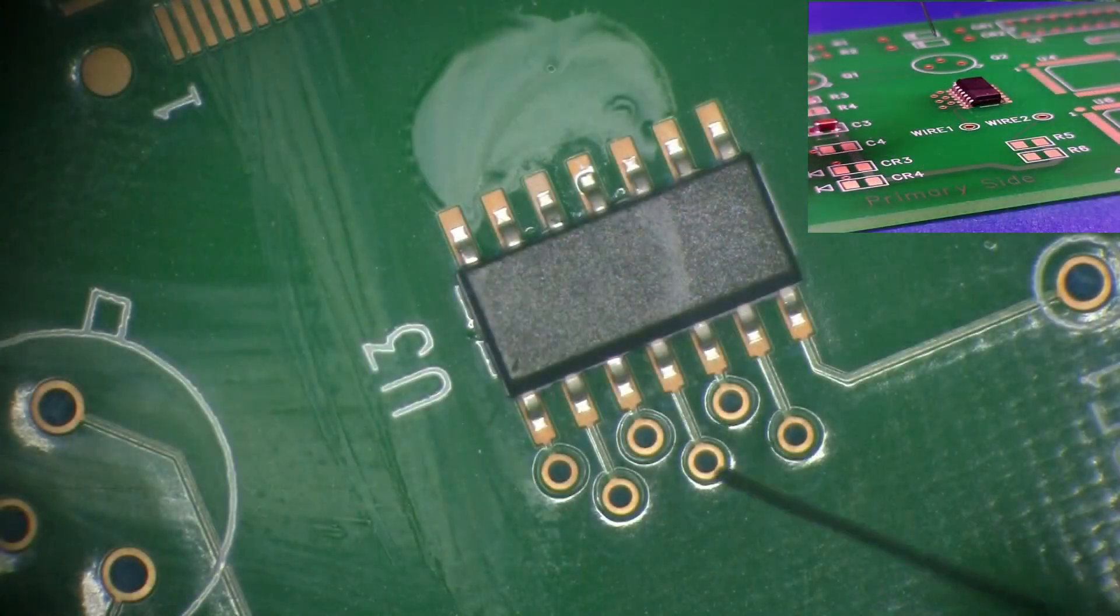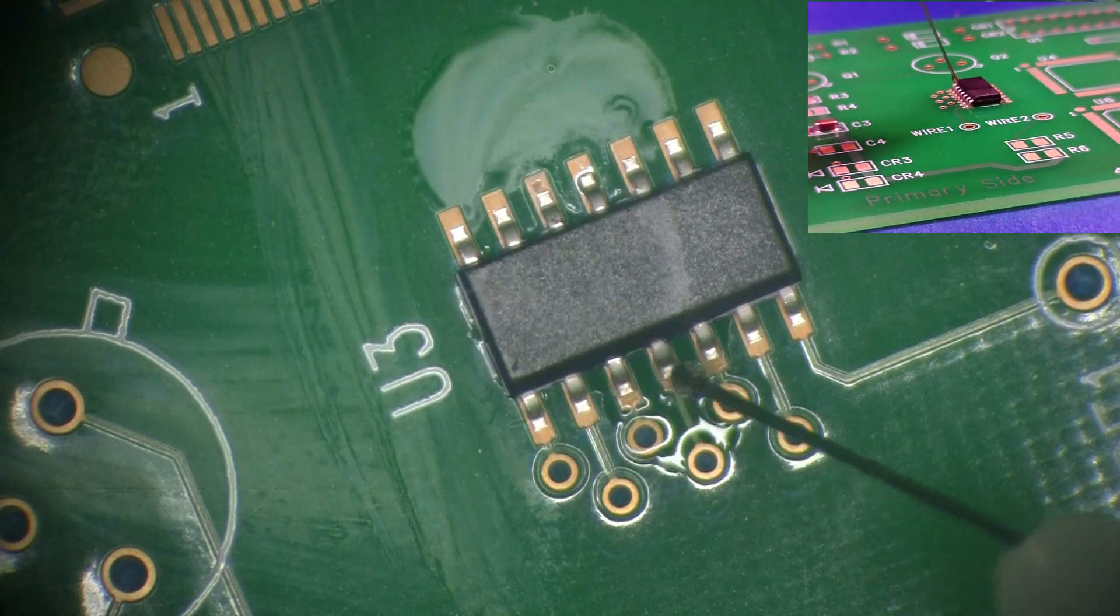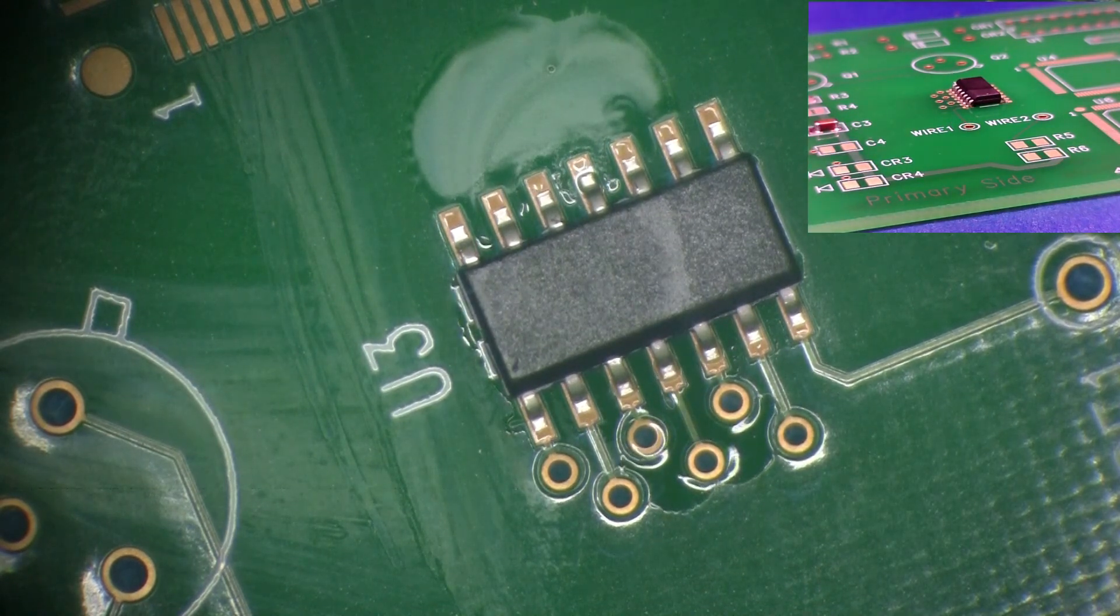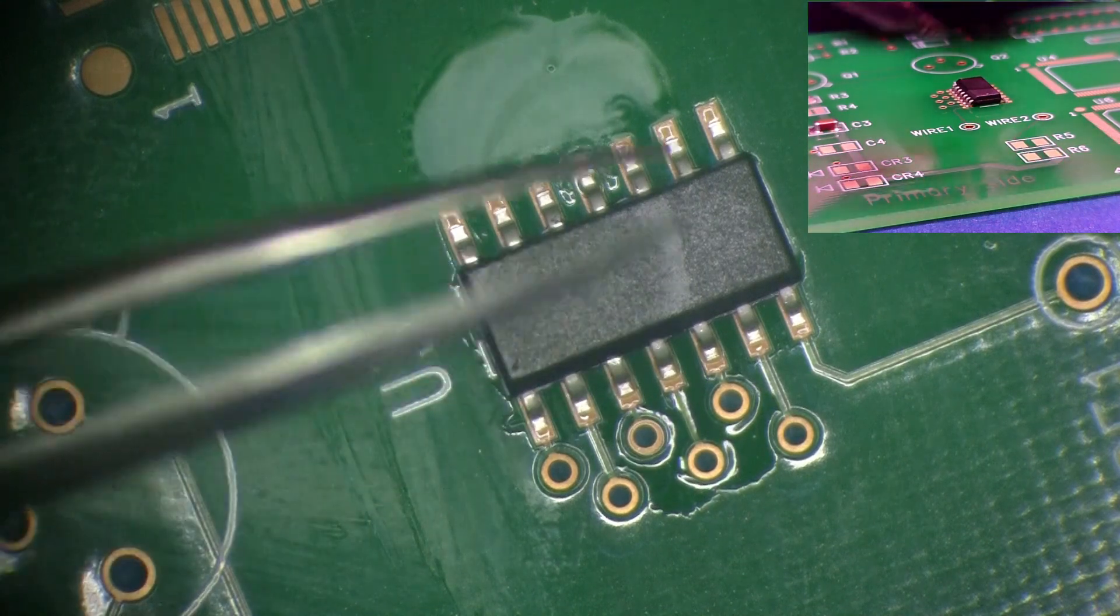Reposition the board so that there is access to the other side of the component and verify that the component has remained in position. Apply flux and tack an additional lead.